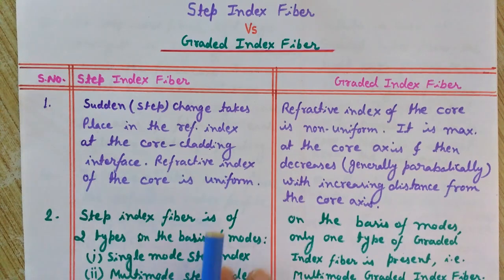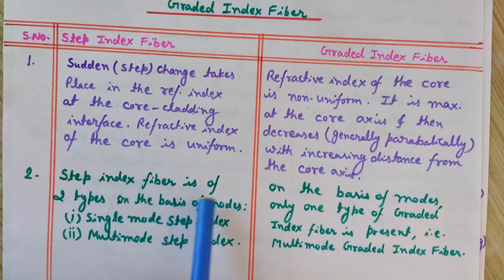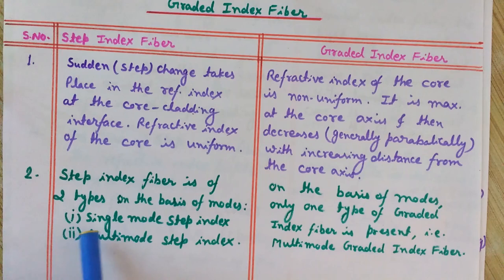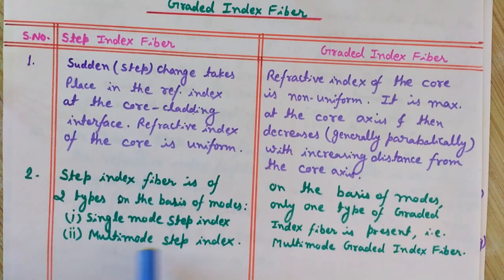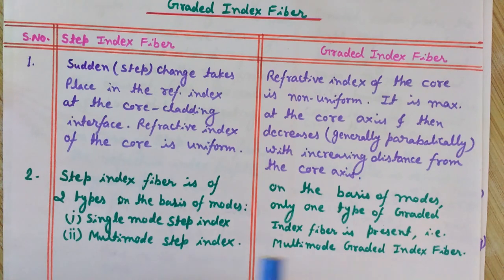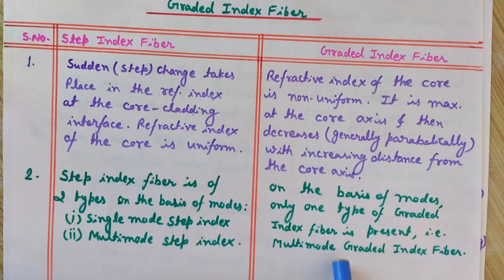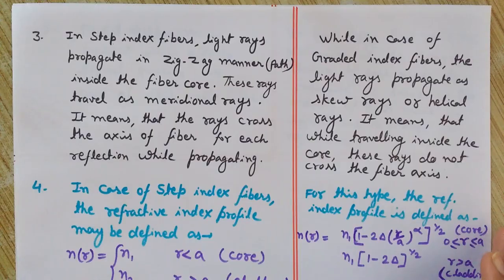The second point: step index fiber is of two types on the basis of modes. If it allows only one mode to pass through it due to its very small diameter, it is a single mode step index fiber. If it has a larger diameter allowing more than one mode to propagate simultaneously, it is called a multi-mode step index fiber. On the basis of modes, only one type of graded index fiber exists: the multi-mode graded index fiber. There is no single mode graded index fiber.